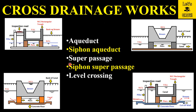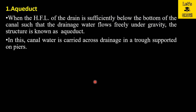We will discuss the aqueduct, siphon aqueduct, super passage, siphon super passage, and level crossing. First, the aqueduct: when the HFL — high flood level — of the drain is sufficiently below the bottom of the canal such that the drainage water flows freely under gravity, the structure is known as an aqueduct.